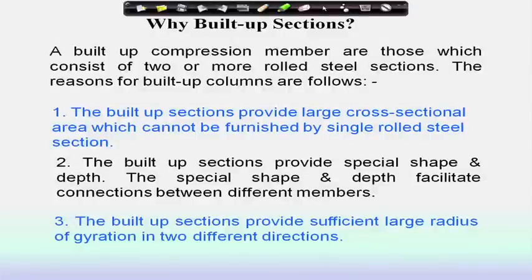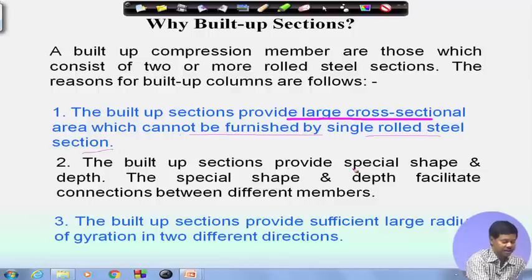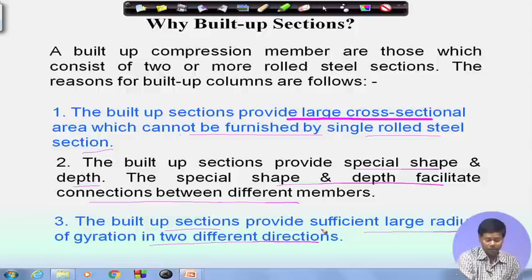The reasons for using built-up sections are: first, they provide a large cross-sectional area which cannot be furnished by a single rolled section. Second, built-up sections provide special shape and depth, which facilitates connections between different members. Third, the built-up section provides a sufficiently large radius of gyration in two directions. Therefore, we generally prefer built-up members for long columns with high load.